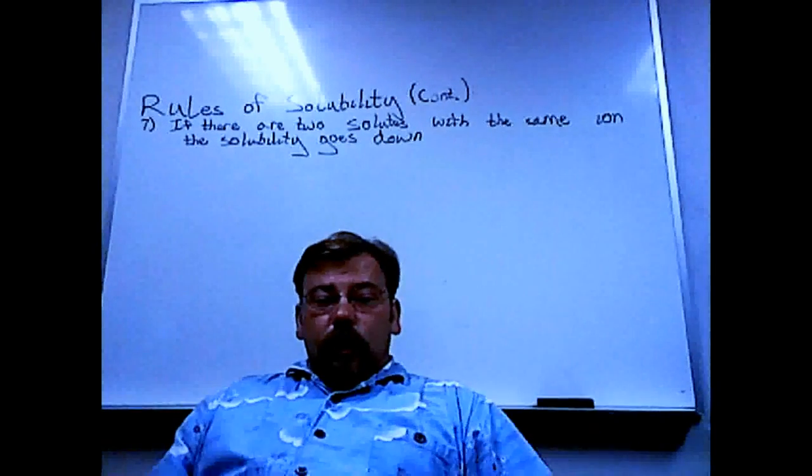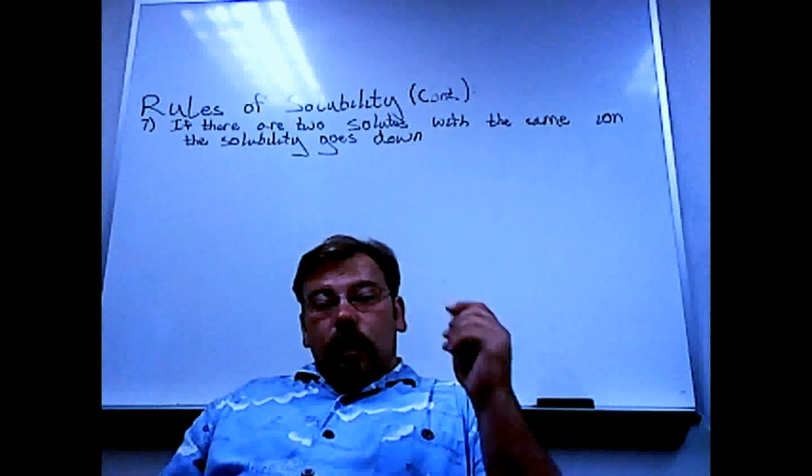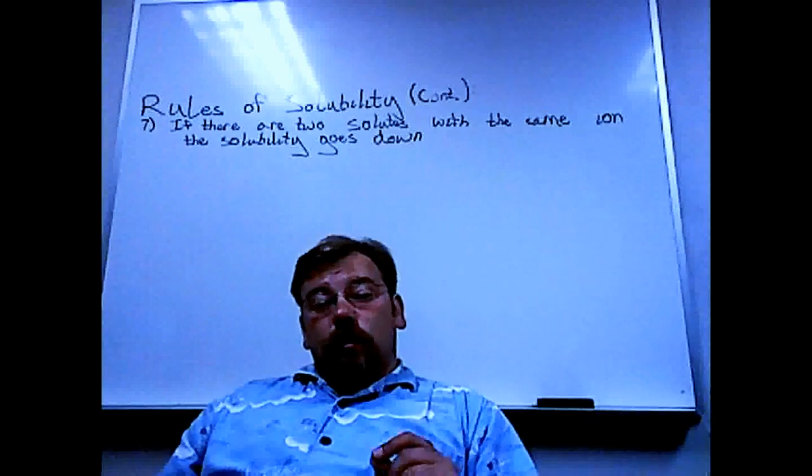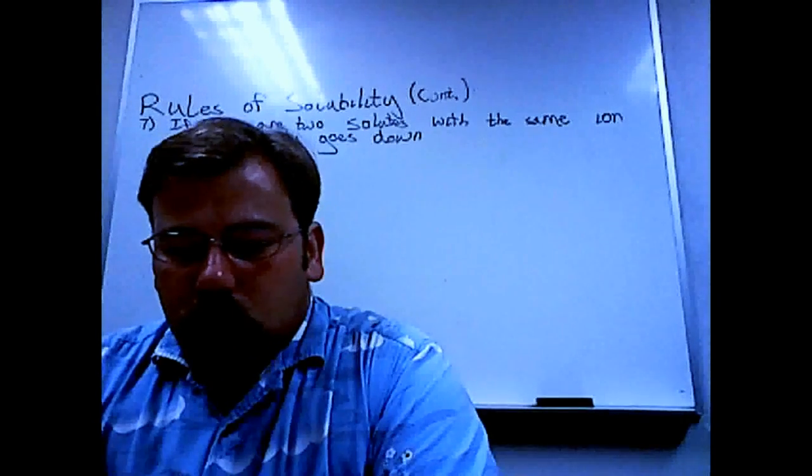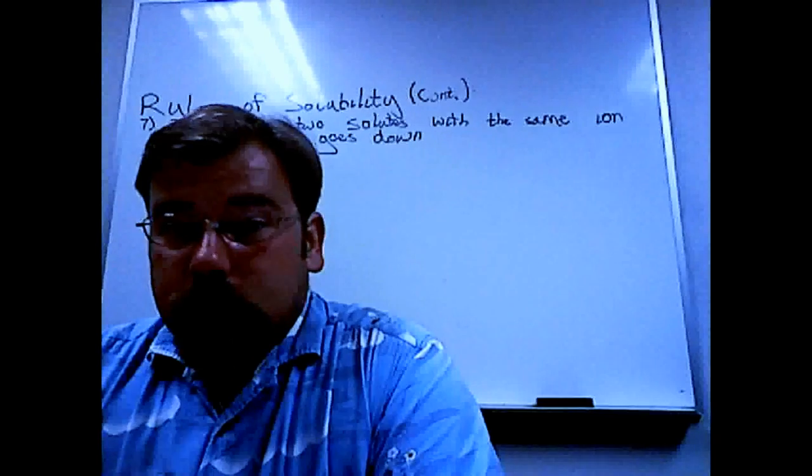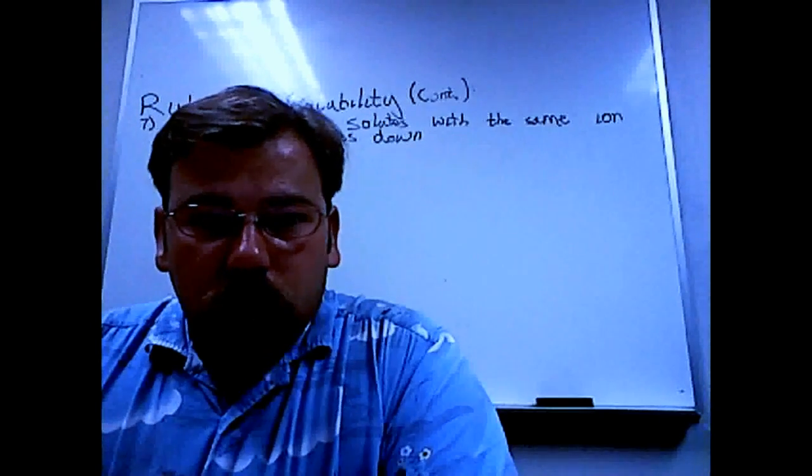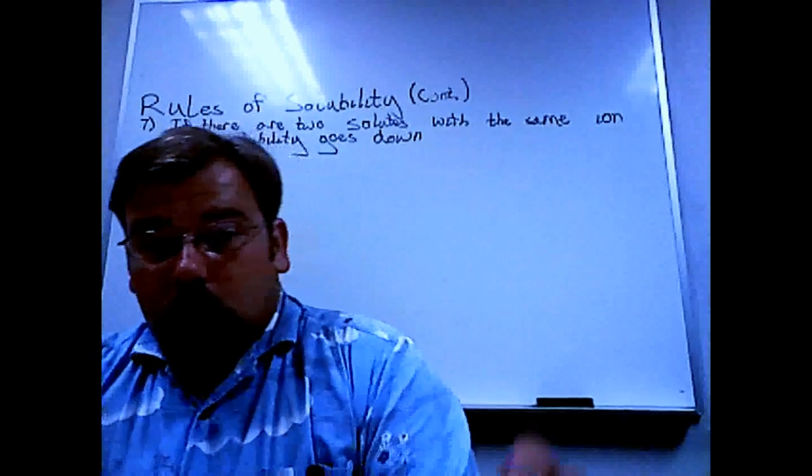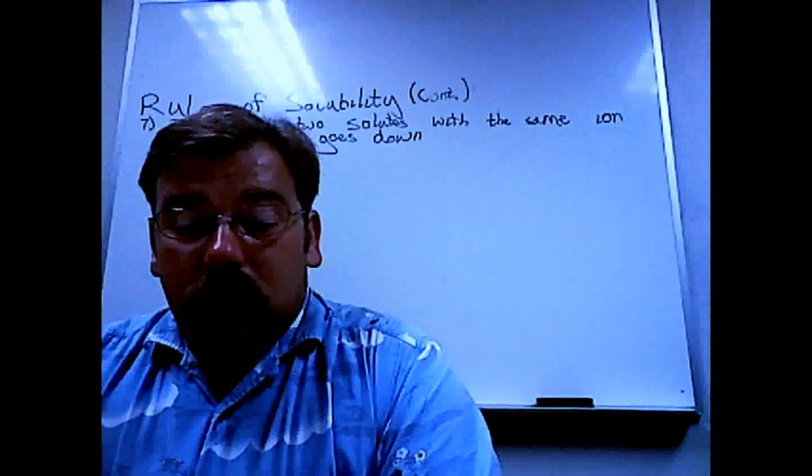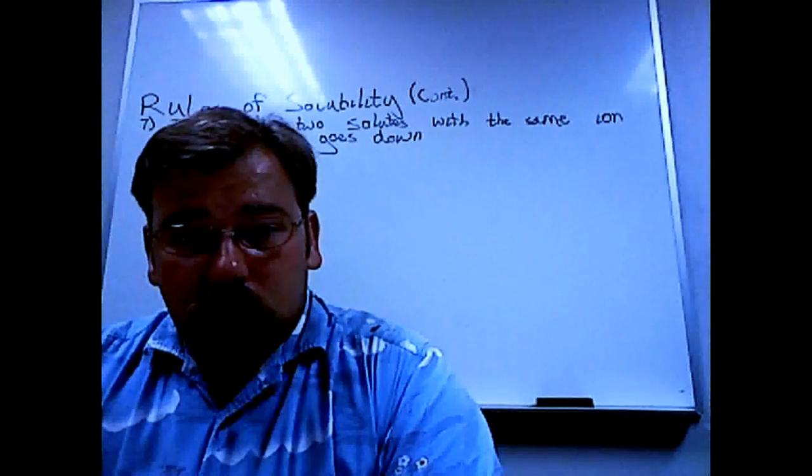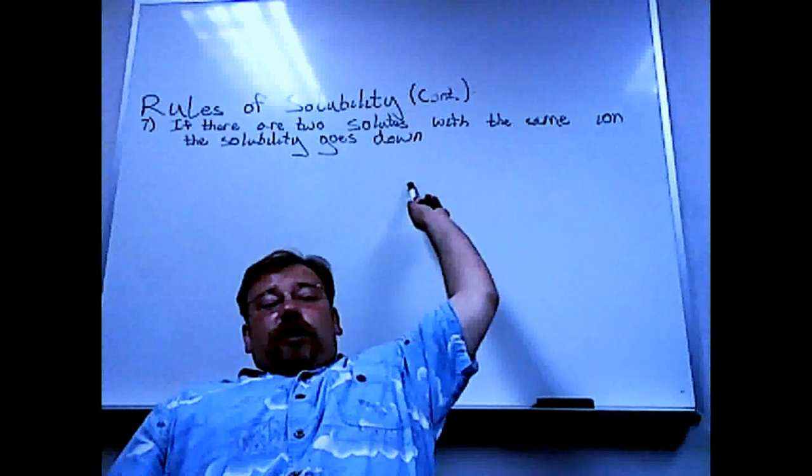Number seven. If there are two solutes with the same ion in the same bucket, solubility of both solutes goes down. Here I should add that solubility is a quantitative value which means it depends on numerical values, which are obtained through experimentation. And it's basically you slowly pour a solute into a solvent and when it stops mixing that's the maximum range. I'm going to do a couple examples to show this point right here.